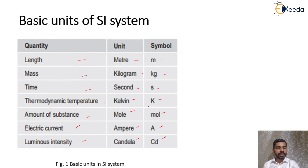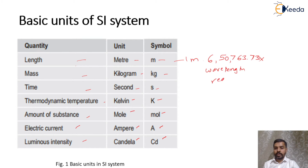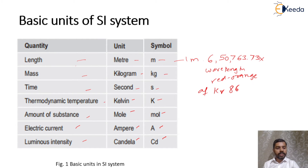A new standard of length was devised at the 11th General Conference on length, in the form of a wavelength standard, according to which one meter is defined as 650,763.73 multiplied by the wavelength of the red-orange radiation of the krypton-86 atom in vacuum. This standard is not a physical object but can be reproduced anywhere and is accepted universally.